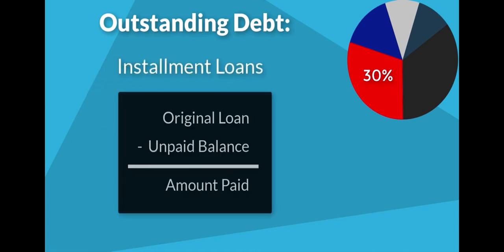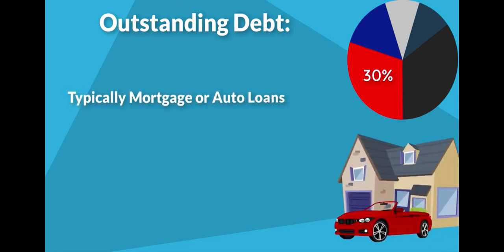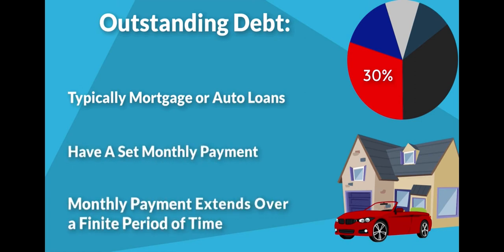Mortgage and installment loans are evaluated based on the difference between the amount of the original loan and the remaining unpaid balance, or how much debt you started with and how much you have left. These loans are typically mortgage or auto loans and have a set monthly payment extending over a finite period of time.